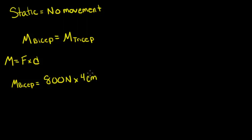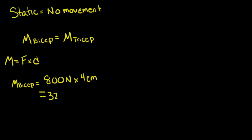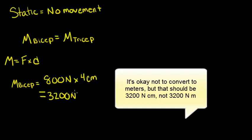Because we're given the other moment arm from the tricep in centimeters, we don't have to change it to meters here. We will plug this into our calculator. We find the moment to be 3,200 newton meters.